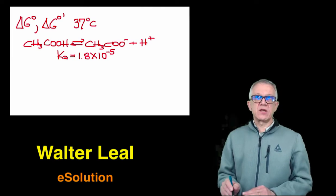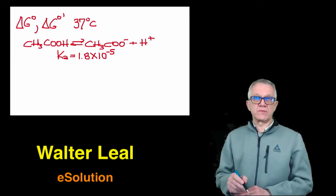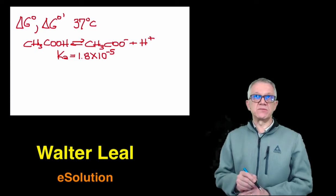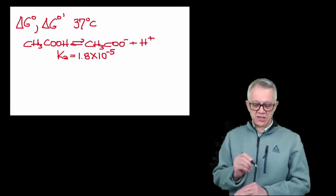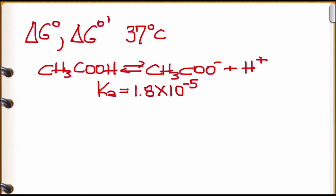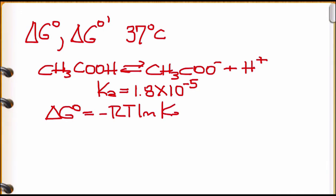That's the information we are going to use to calculate ΔG° and ΔG°'. In this case, we use the equation: ΔG° = −RT ln(Ka).